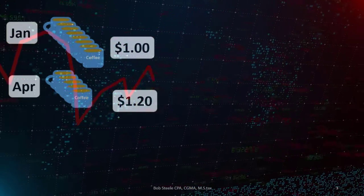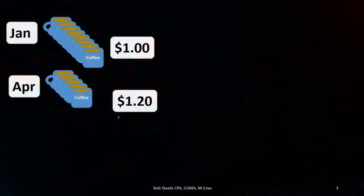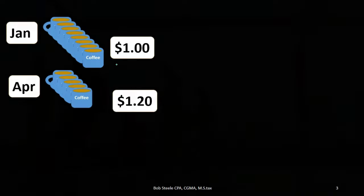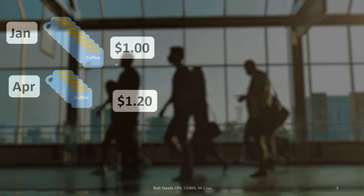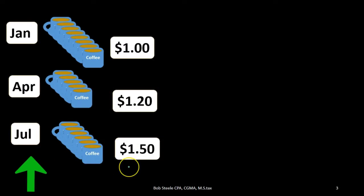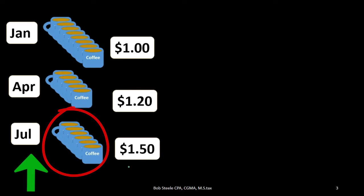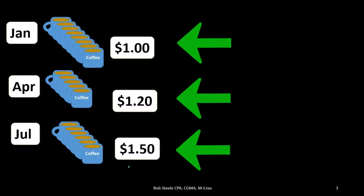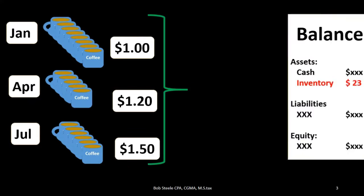The price could go down as well — for example, if the glaze on a coffee mug became cheaper — but the norm is that prices go up, and everything would be reversed if prices went down. Then in July we purchased another bunch of coffee mugs at $1.50 — price going up again. We haven't sold any coffee mugs yet in this example; we're stockpiling them, expecting to sell them at some point.